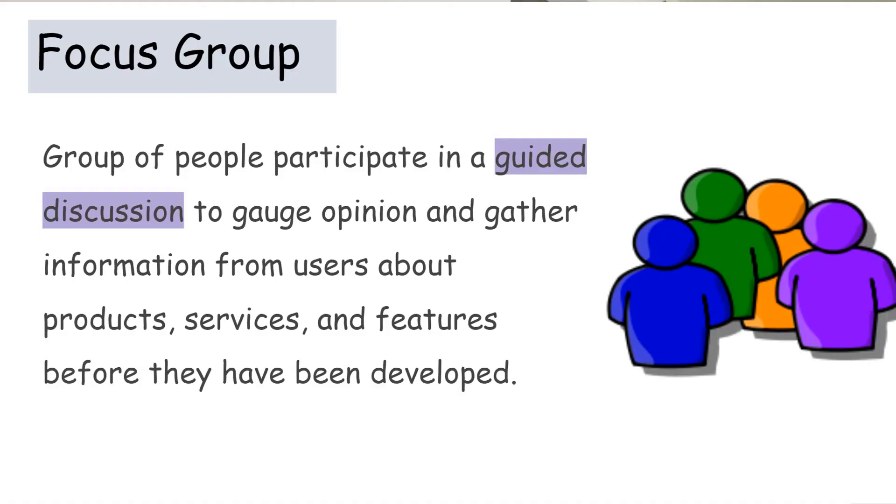There are essentially six key methods of conducting qualitative research. Starting with focus group, in focus group a group of people participate in a guided discussion towards opinion and gather information from users about product, services, and features before they have been developed.